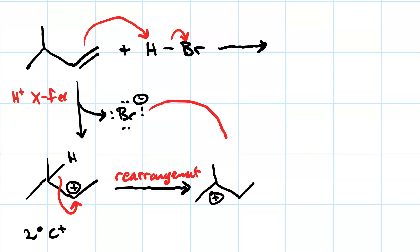So rearrangement will happen if it's going to give you a more substituted carbocation. Then the nucleophile, the bromide, is going to attack that carbocation. So it turns out, it doesn't matter what side the bromide adds on, whether it's above the plane of the carbocation or below,